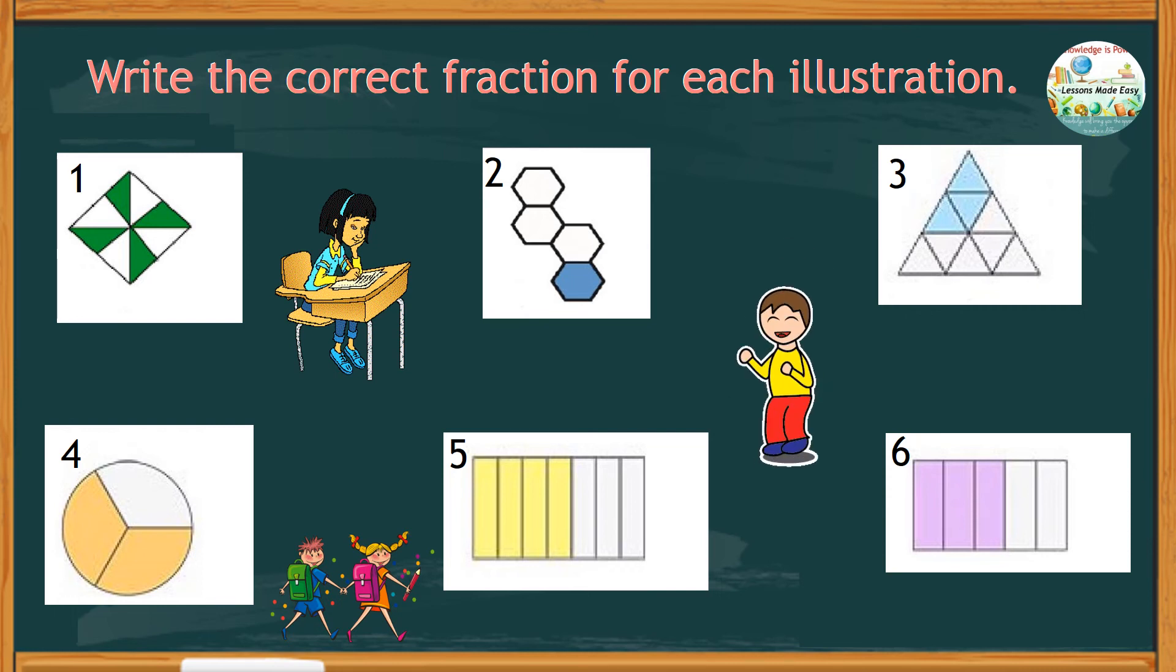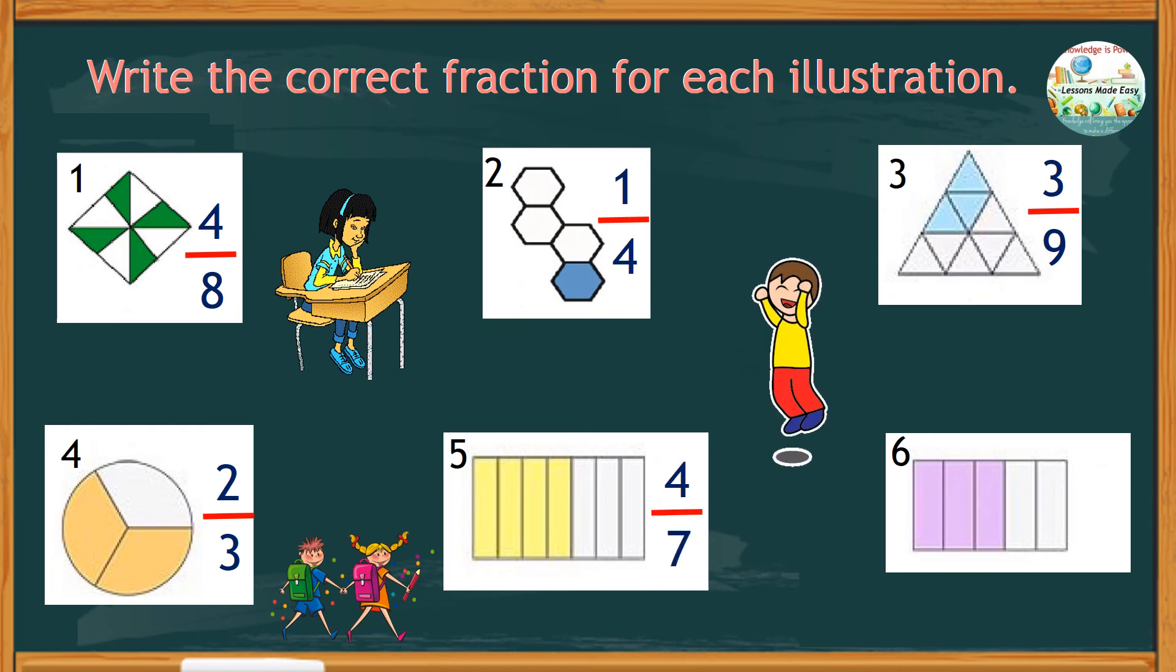For number one, our fraction is four over eight. Number two, it's one-fourth. Number three, it's three over nine. Number four, it's two-thirds. Number five, it's four over seven. And number six, it's three over five.